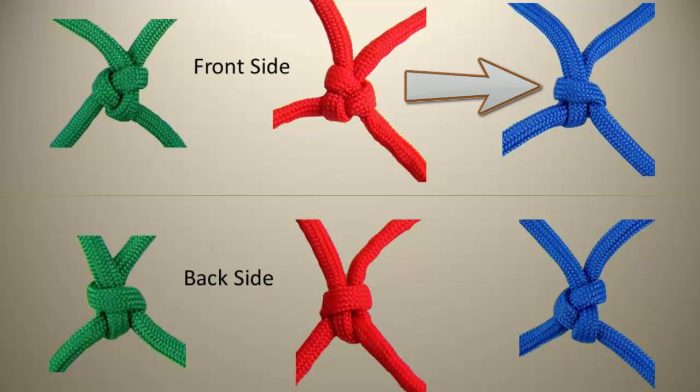This means that the rows tied in the blue netting are opposite those tied in the green and red netting. A front side look in the blue netting is the same as a back side look in the green and red netting.